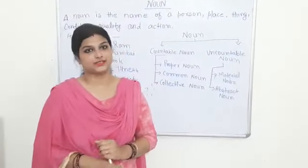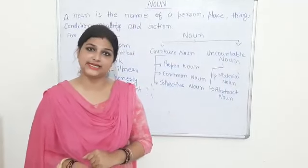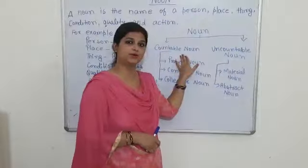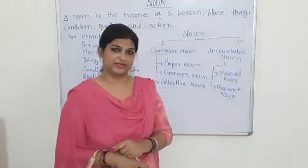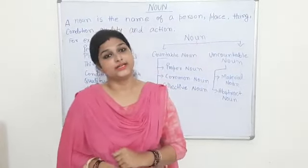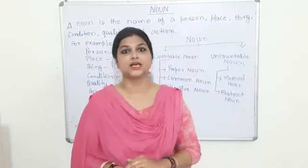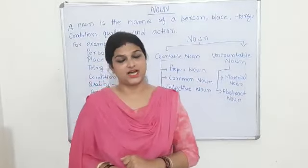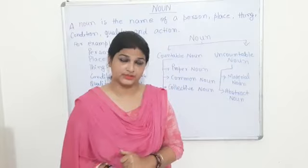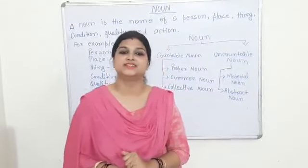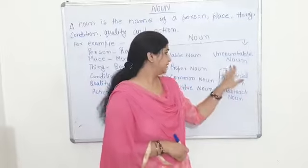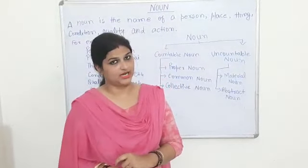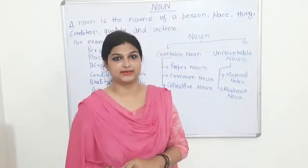Now we will see the parts of noun. Nouns are mainly divided into two main parts. First one is countable noun and second one is uncountable noun. We will see what is countable noun and what is uncountable noun. Countable noun: the nouns which can be counted are called countable noun — like book, chair, Ram, Sham. Uncountable noun: the nouns which cannot be counted are called uncountable noun — like copper, silver, etc.